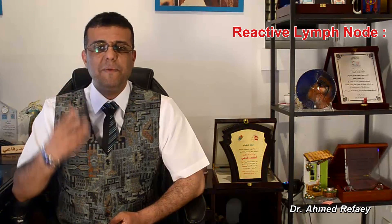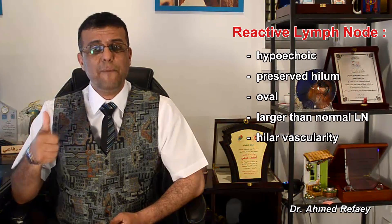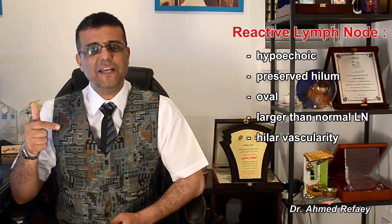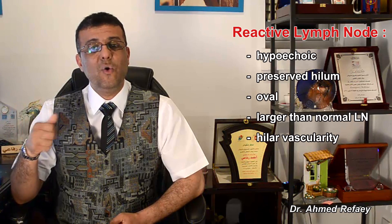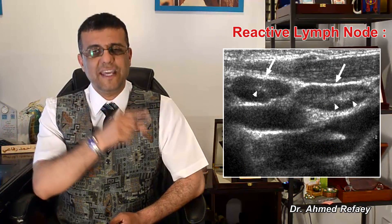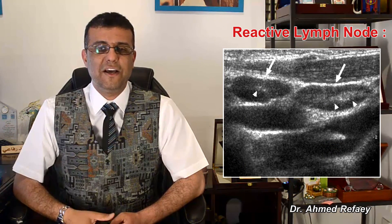On spectral Doppler ultrasound, the normal lymph nodes usually show low vascular resistance — resistive index below 0.7 and pulsatility index less than 1.5. The second group is reactive lymph nodes, which are associated with any infection in the region of head and neck. On gray scale ultrasound, the reactive lymph node is hypoechoic with preserved hilum and oval shaped, like a normal lymph node, but larger, with short axis more than nine millimeters.